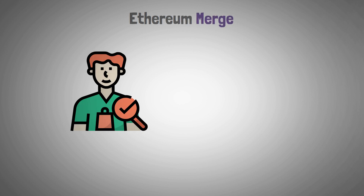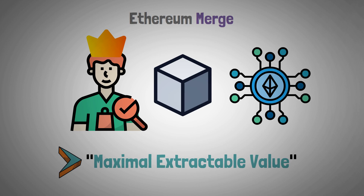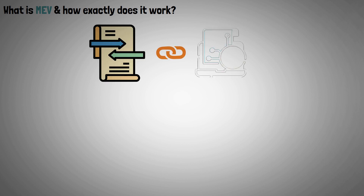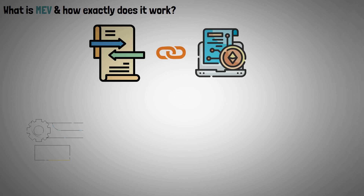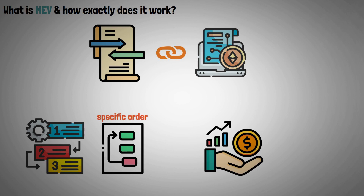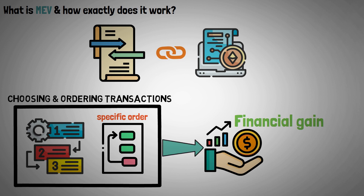As a result of the Ethereum merge, validators rather than miners are now responsible for creating new blocks on the Ethereum network. That's why it is now known as maximal extractable value, because it is no longer restricted to miners only. When transactions contain more complex smart contract information, by prioritizing some of them over others and arranging them in a specific order, additional profits may be extracted. The method of choosing and ordering transactions for financial gain is the core of MEV.